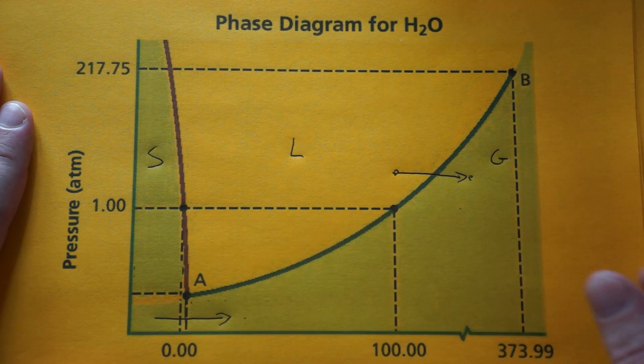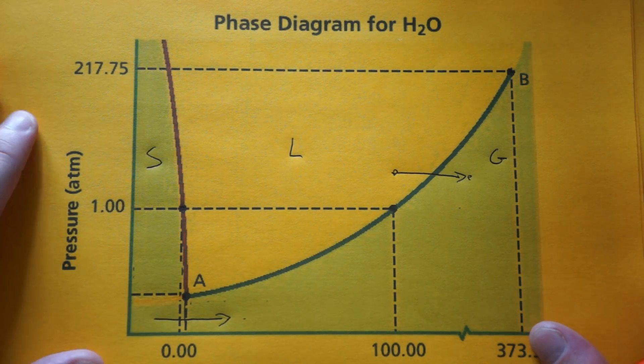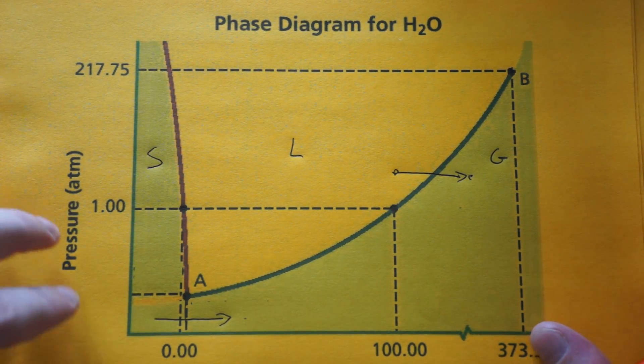Right here is the triple point. That means all three phases—solid, liquid, and gas—are at equilibrium with each other. They all exist together.